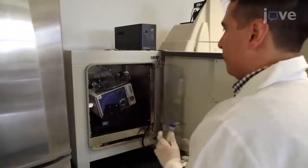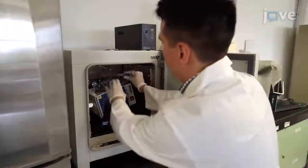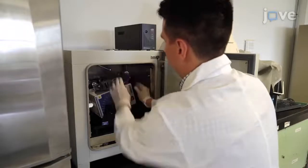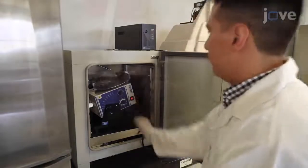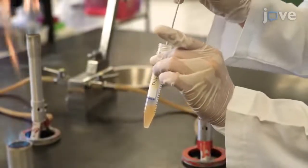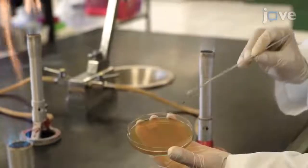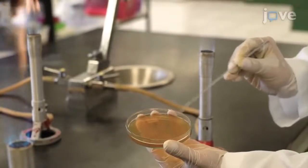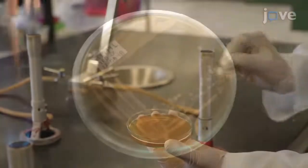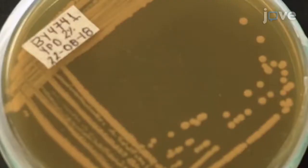Incubate the yeast overnight in an orbital shaker at 30 degrees Celsius and 200 RPM for streaking onto a 60-millimeter 2% YPD agar-filled petri dish the next morning. Culture the dish at 30 degrees Celsius until isolated colonies are observed.